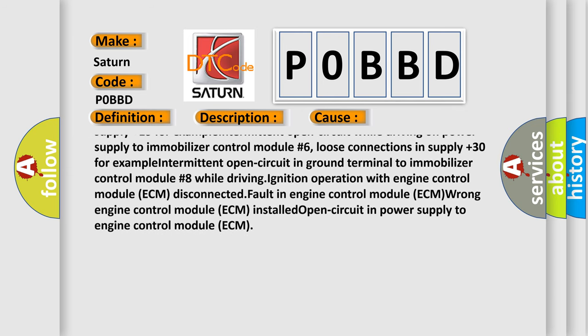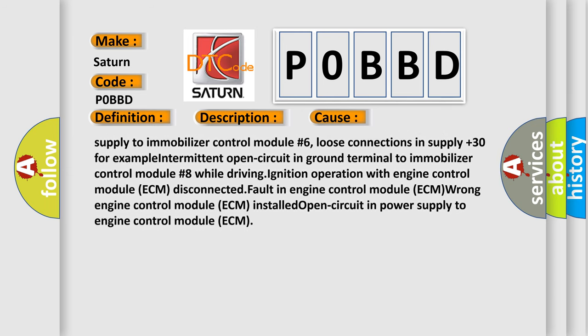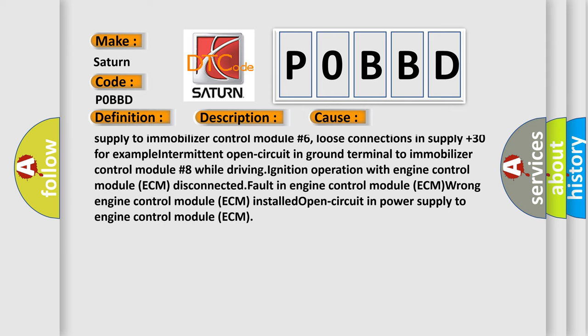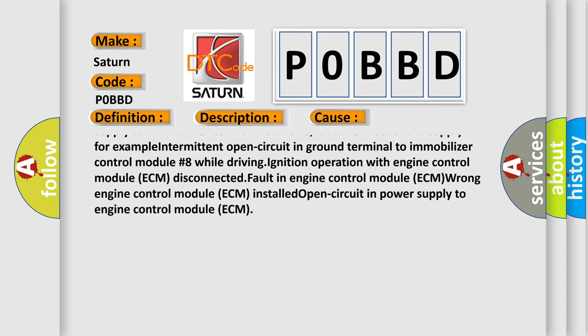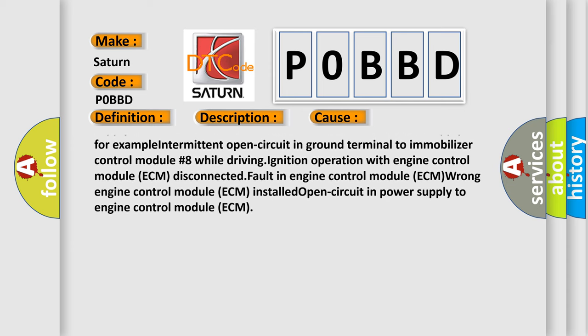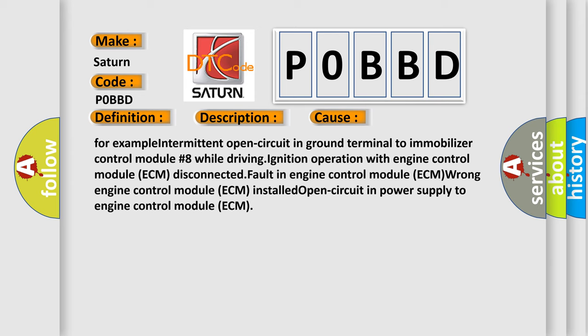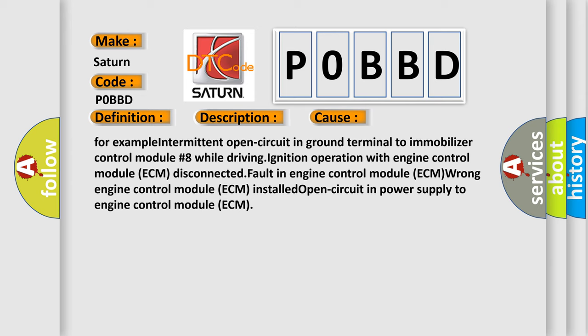Loose connections in supply plus 30, for example intermittent open circuit in ground terminal to immobilizer control module. Ignition operation with engine control module ECM disconnected. Fault in engine control module ECM. Wrong engine control module ECM installed. Open circuit in power supply to engine control module ECM.